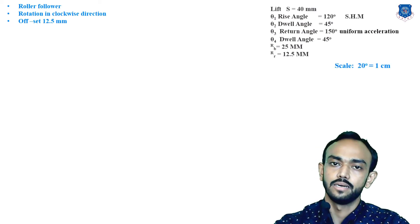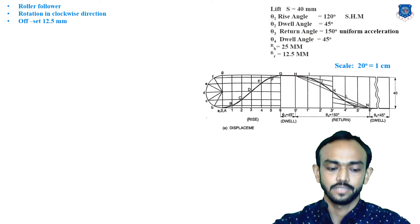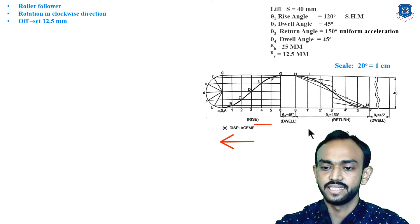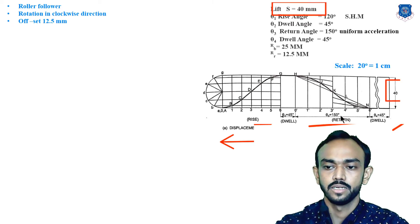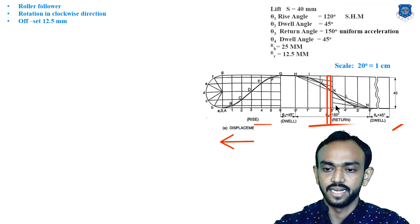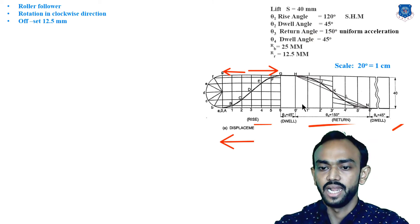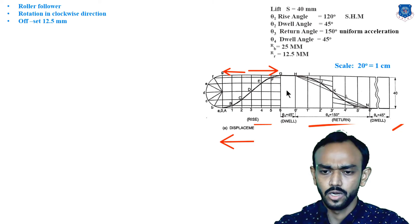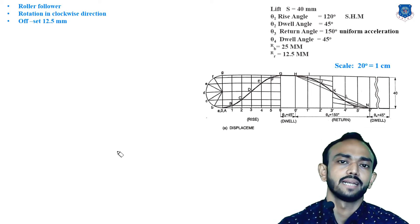First of all we have to make the displacement diagram, which will be the same as in the last example. The total length will be 18 cm and the height will be 4 cm, because the lift is given as 40 mm. Then divide the rise and return each into six parts. The rise portion corresponds to 120° divided by 20 = 6 cm, and the dwell portions are marked accordingly.